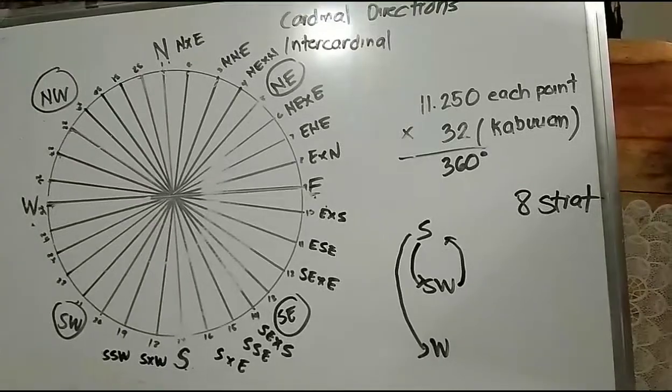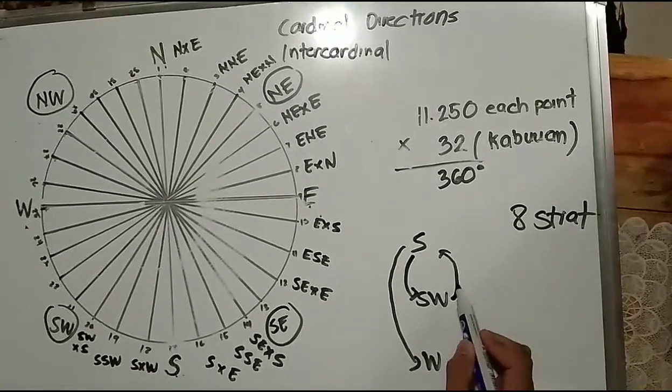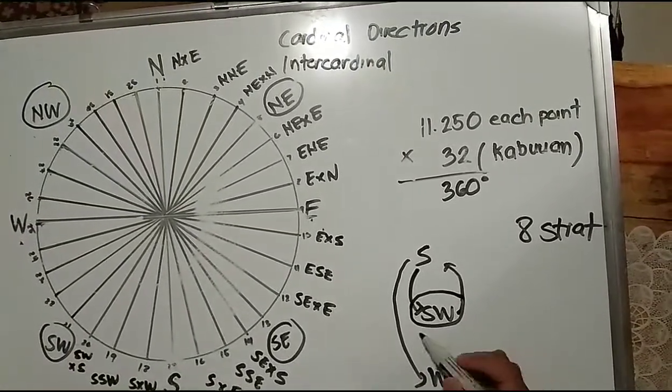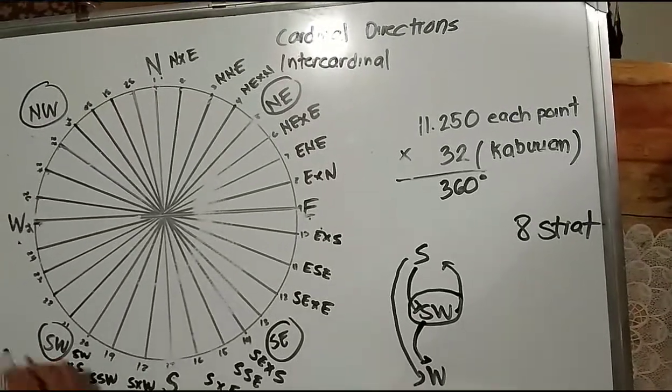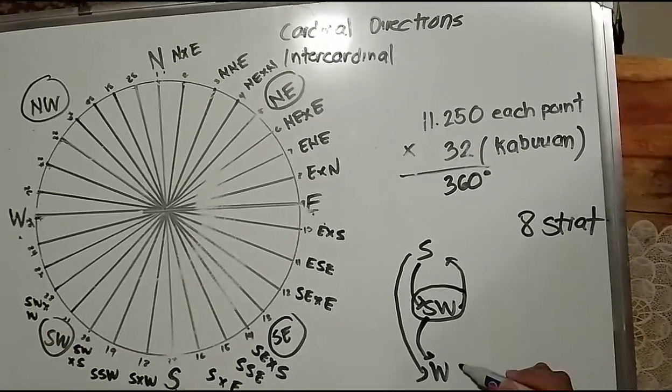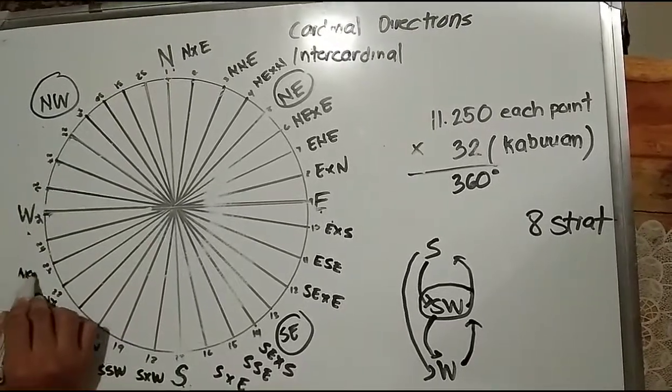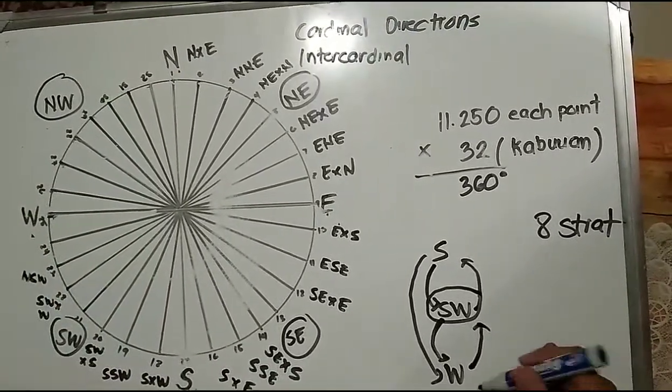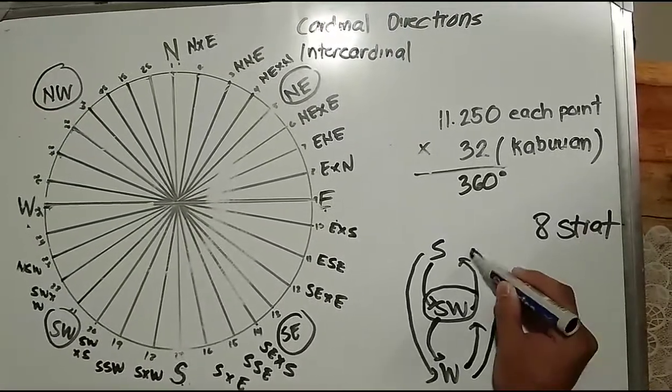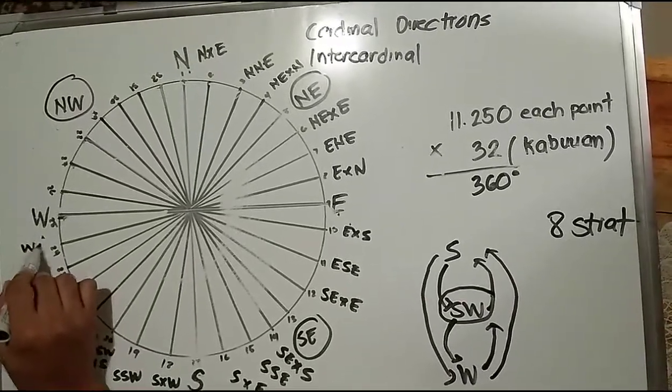The fourth is southwest, the intercardinal direction. Going down: southwest by west. Next: west southwest. And from west going to south: west by south. We're done with the third quadrant.